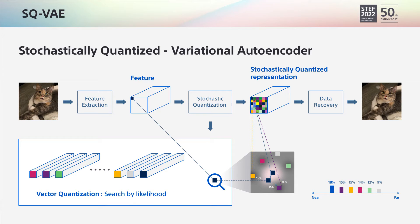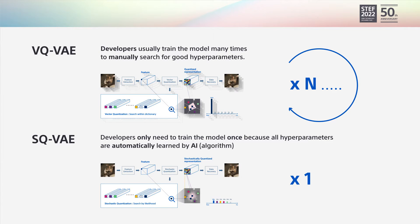Sony developed an improved approach of this technique, which selects quantized representations based on how likely items in the codebook depict the compressed image well. This new approach is called Stochastically Quantized Variational Autoencoder, or SQVAE for short. With this, we can reduce the number of repeated training trials needed to reach the best quality of generation.